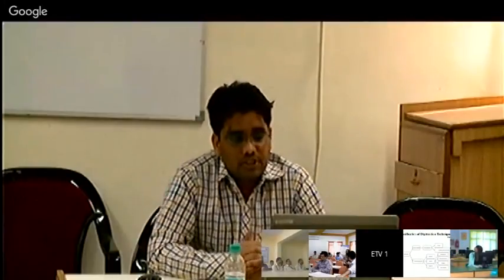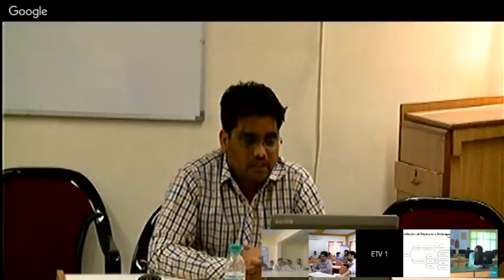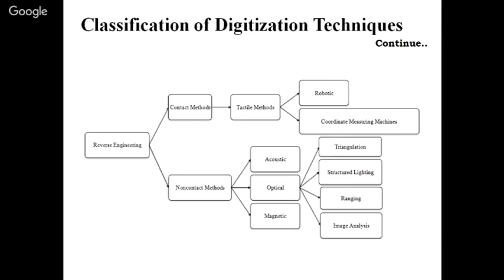There are some classifications of the digitization process used in reverse engineering. Contact scanning uses tactile methods such as robotics grippers and coordinate measuring machines (CMM). Non-contact methods use acoustic, optical, or magnetic physics. In general, optical scanning techniques are used such as triangulation method, structured light method, ranging method, and image analysis method.